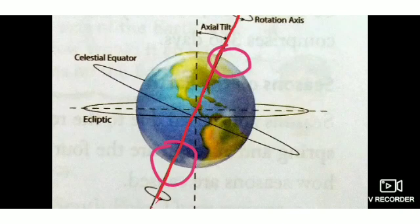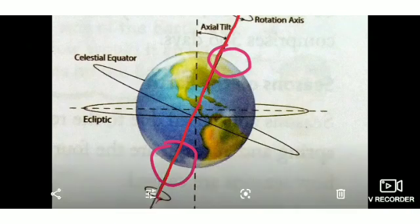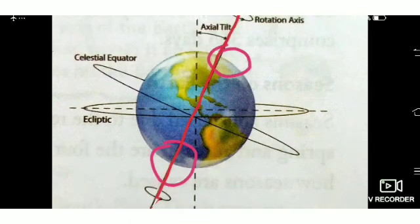The earth takes 24 hours — that is one day — to complete a single rotation around its axis.